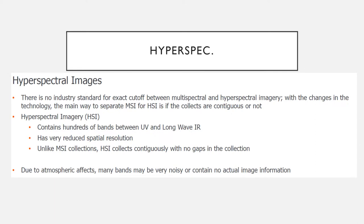Then you have hyperspectral imagery. There's no real exact standard — basically if it has more bands than multispectral, consider it hyperspectral. There can be hundreds of bands between just the UV and long-wave ranges. It has very reduced spatial resolution, and unlike multispectral it collects continuously with no gaps. However, many of these bands pick up a tremendous amount of noise due to atmospheric interference, to the point that some don't have any actual image information at all.